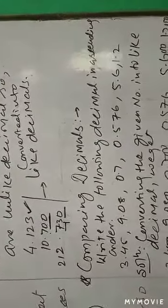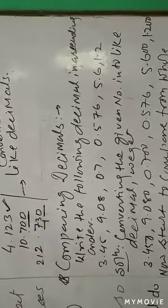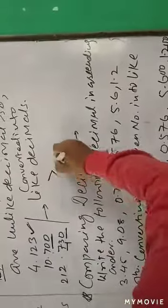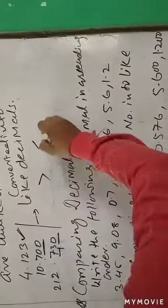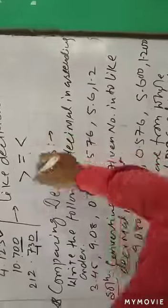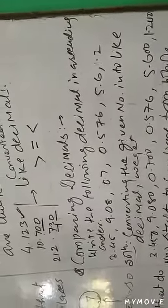Comparing of decimals. If you compare two decimals, you can use the greater than sign, the smaller than sign, or the equal to sign.